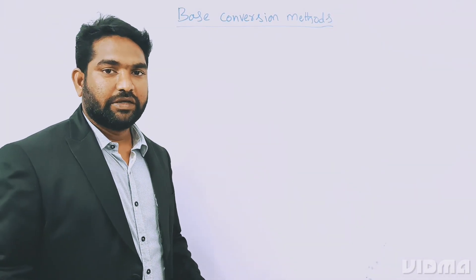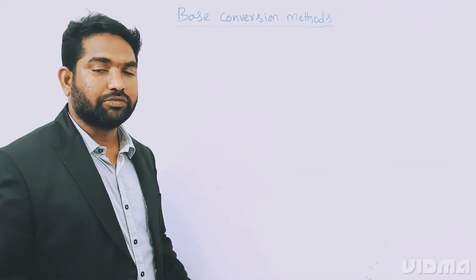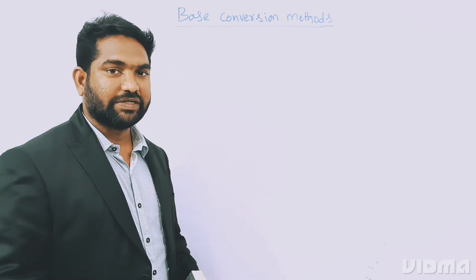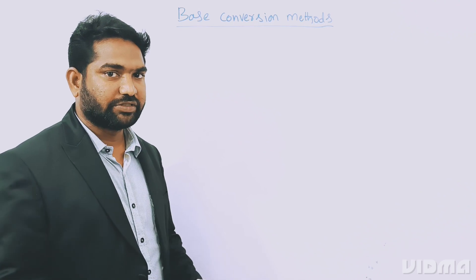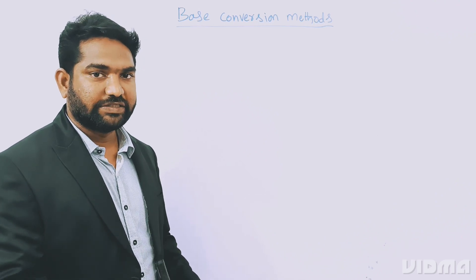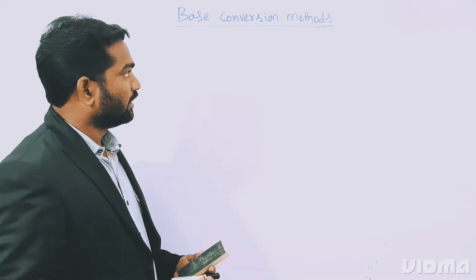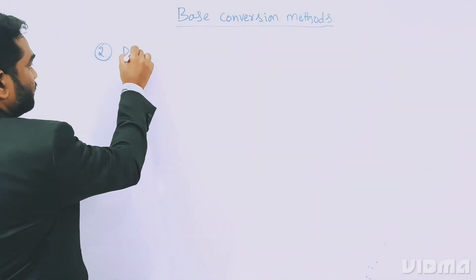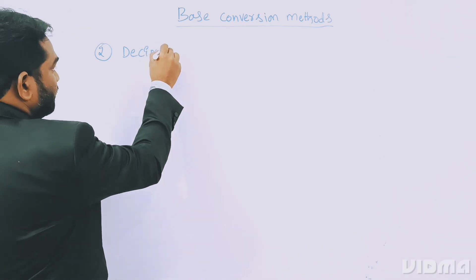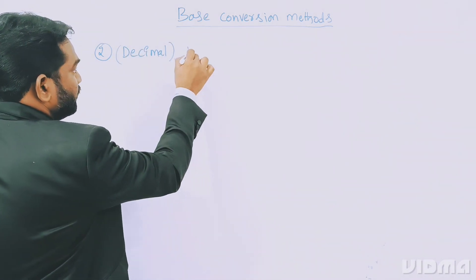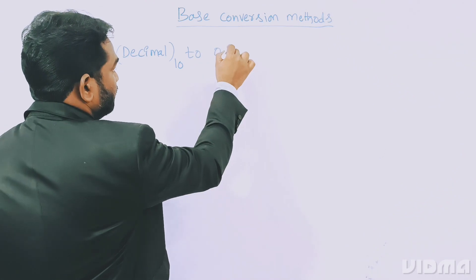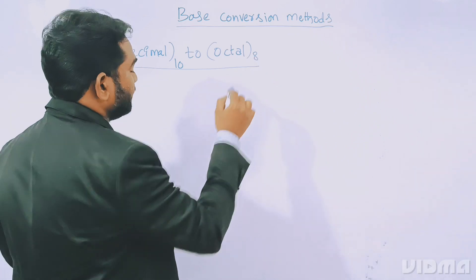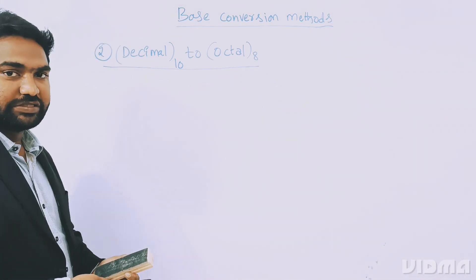Hello all, welcome to VJD Academy. In the previous class we have seen how to convert decimal to binary number system. Now let us try to understand the second conversion method — how to convert decimal to octal number system. The second conversion method is decimal, base 10, to octal, base 8.